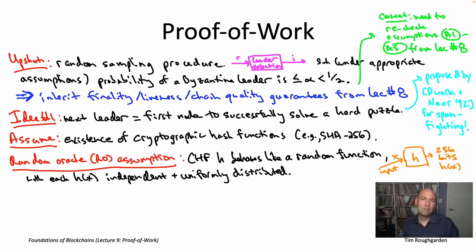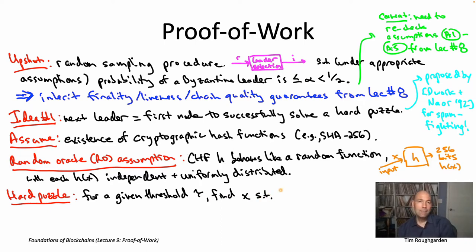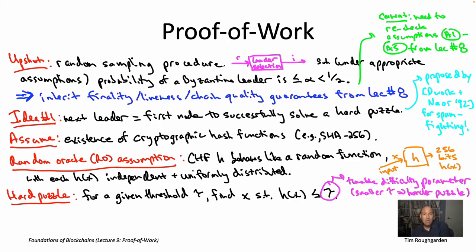Now that we've talked about cryptographic hash functions like SHA-256, I can tell you what the hard puzzle looks like. The hard puzzle is finding an input which, when fed into the cryptographic hash function, gives a very small number as output — a number relatively close to zero. Precisely: given threshold tau, find an input x such that x hashes to an output which, when viewed as an integer, is no larger than tau. Tau is a tunable difficulty parameter: the smaller tau is, the harder the puzzle; the bigger tau is, the easier the puzzle.